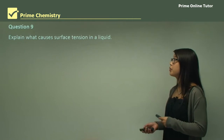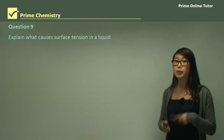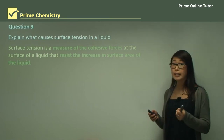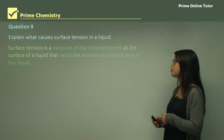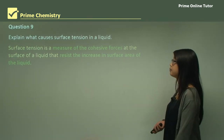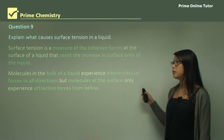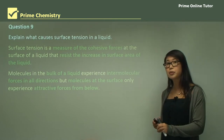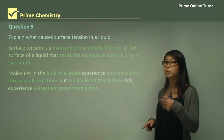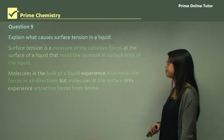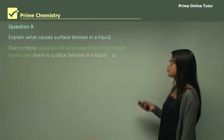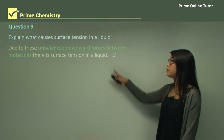To explain what causes surface tension: surface tension is a measure of cohesive forces at the surface of a liquid that resists the increase in surface area. Like and like particles attract each other, and at the surface of the liquid all forces pull down, not toward the gas above. Molecules in the bulk experience forces in all directions, but surface molecules only experience the molecules below attracting them downward. Therefore, there is a net downward force on surface molecules, resulting in surface tension.